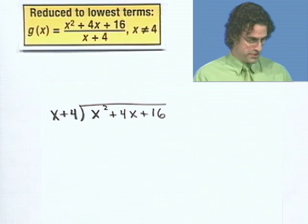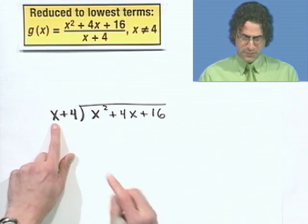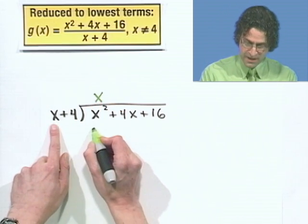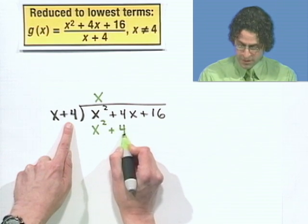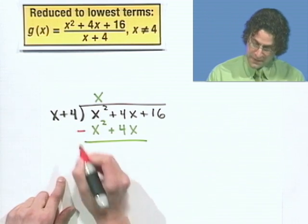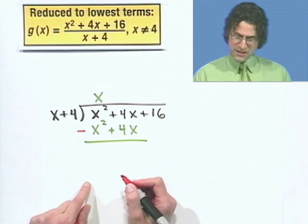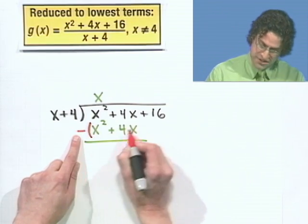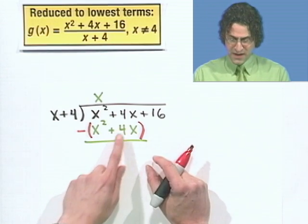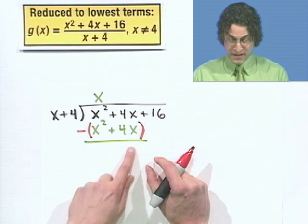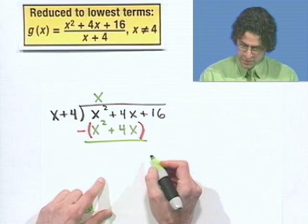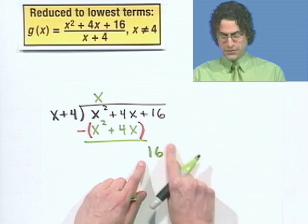How do we do it? Well, what we do is we say, what do I have to multiply x by to make it x squared? Well, that's an x. And then I take x and multiply it by this entire denominator. So I see x squared plus 4x. And then I subtract, but I don't just subtract like this. That would not be good. That's a classic mistake. What I want to do is make sure that that negative sign hits everything. So it actually has to hit this positive 4x. So when I subtract, I see x squared minus x squared, that's zero. And then I see 4x minus 4x, that's zero. So everything is just zero. I bring down the term that remains, which is a 16.